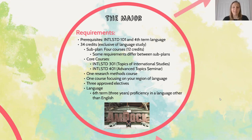Students in the Political Economy and Development sub plan also need to complete Econ 101 before declaring. Of the 34 credits in the major, four sub plan courses are required — four courses that focus on your specific global or world problem, whether that's PED, ISNC, CCI, or GEH.